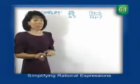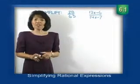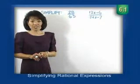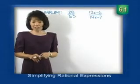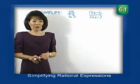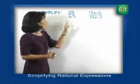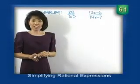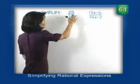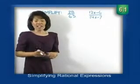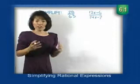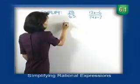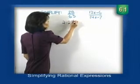28 over 63. To simplify this fraction, we just want to divide out common factors. You can use any method you're comfortable with in dividing out those common factors. I'm going to use a method where I'm going to write each of these terms as its product of primes and divide out those common factors. I see 28. I think of 4 times 7, but I know 4 is not a prime number. I'm going to rewrite 4 as 2 times 2, and then there's my 7.